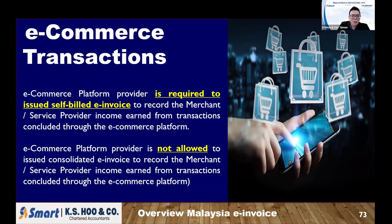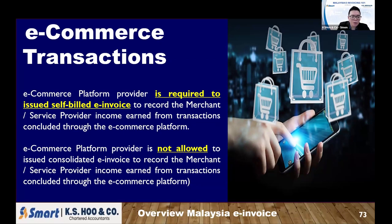E-commerce transactions: the self-bill here refers to the transaction between the e-commerce platform and the merchant. Only the e-commerce platform issues a self-billed invoice to the merchant to list out the income earned by the merchant. When a merchant puts their goods on an online platform to sell, only the platform knows how much was sold. So the e-commerce platform calculates the revenue for the merchant and issues a self-billed invoice to them. The e-commerce platform is not allowed to issue a consolidated e-invoice — they must issue a self-bill to each individual merchant.